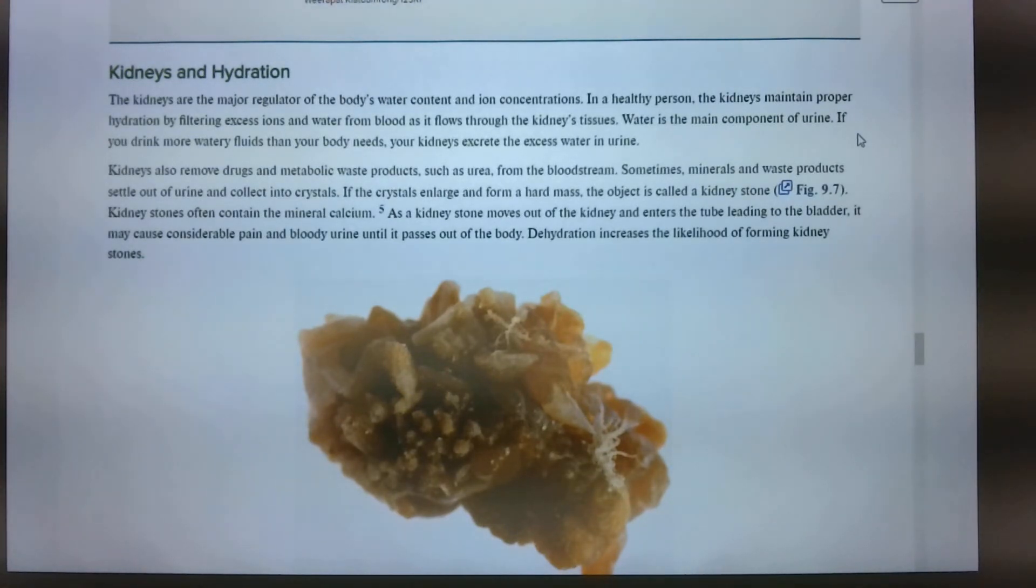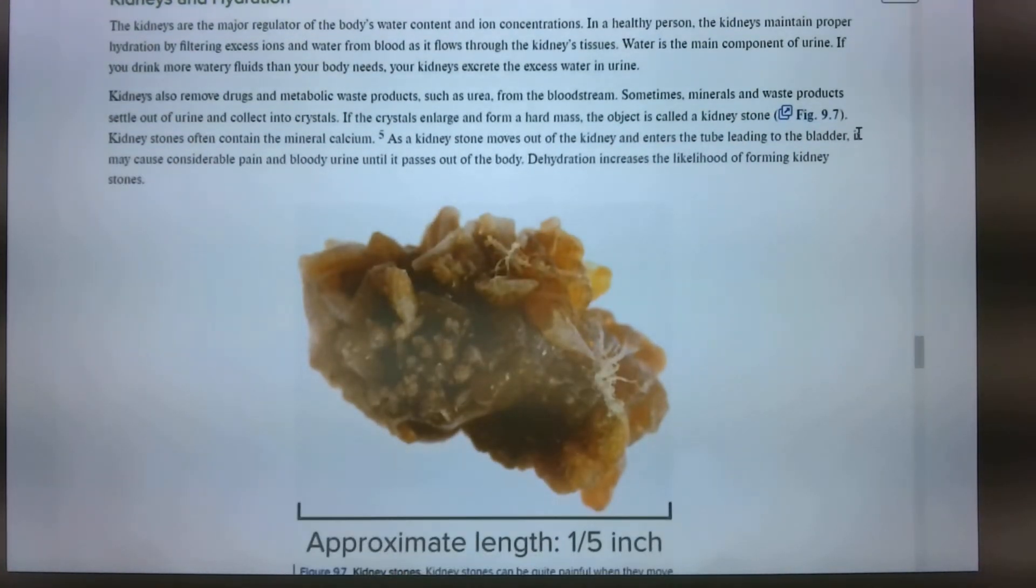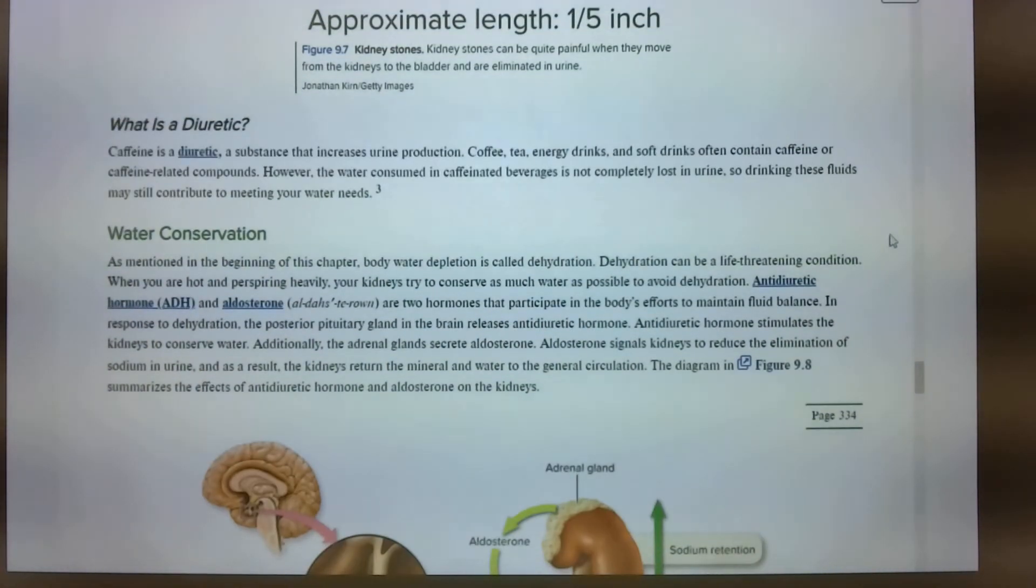Kidney stones often contain the mineral calcium. When kidney stones move out of the kidney, they enter the tube leading to the bladder. And that's usually where it gets stuck and they have that lithotripsy. Dehydration increases the likelihood of forming kidney stones. So if you work out a lot and you're not drinking enough water, you might want to re-suggest that. Just talked about this. What's a diuretic? Caffeine is a diuretic. Okay? We find caffeine in tea, coffee, chocolate. How many of you knew caffeine was in cocoa? Small amounts, but it's there. Small amounts, but it's there. A substance that increases urine production.